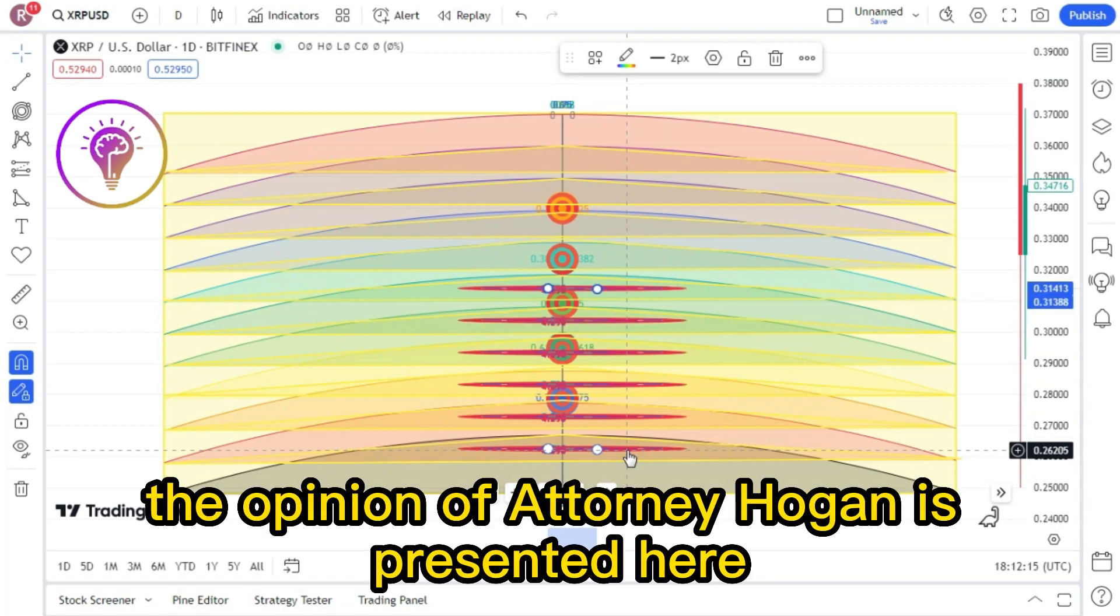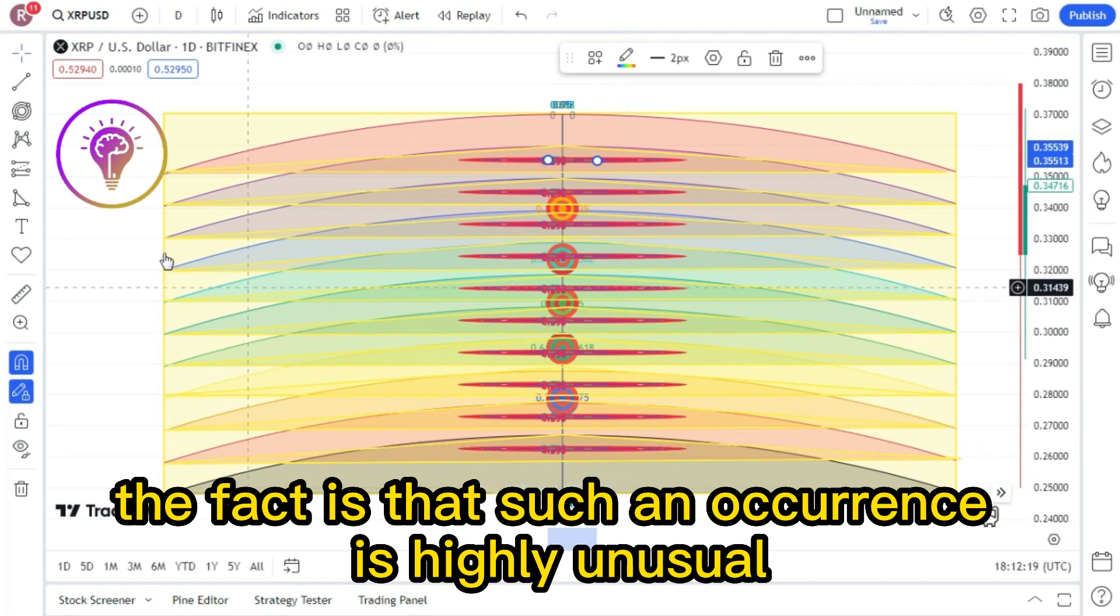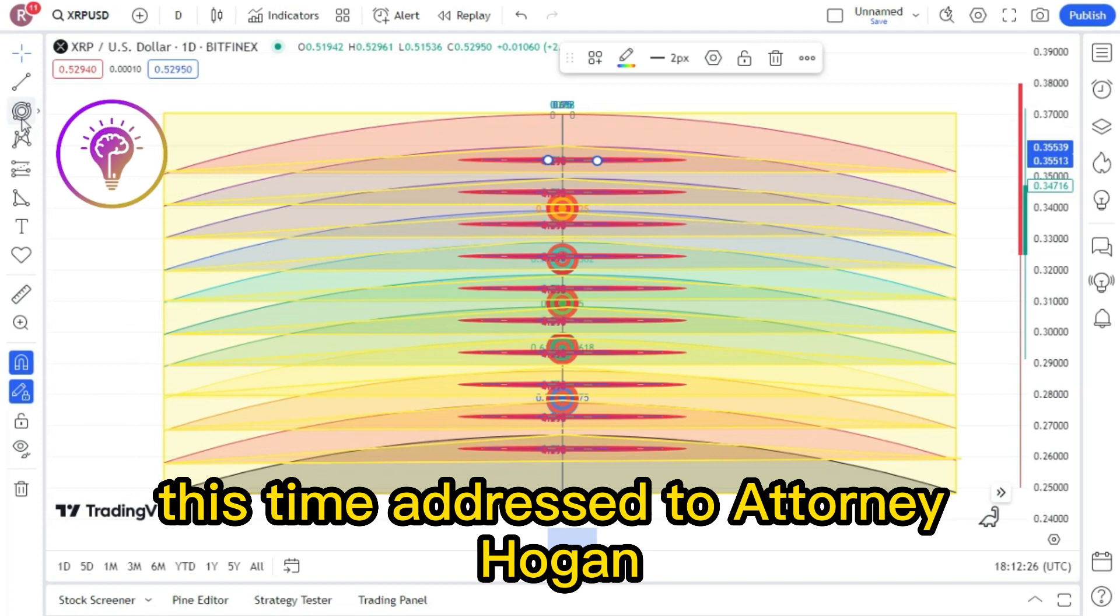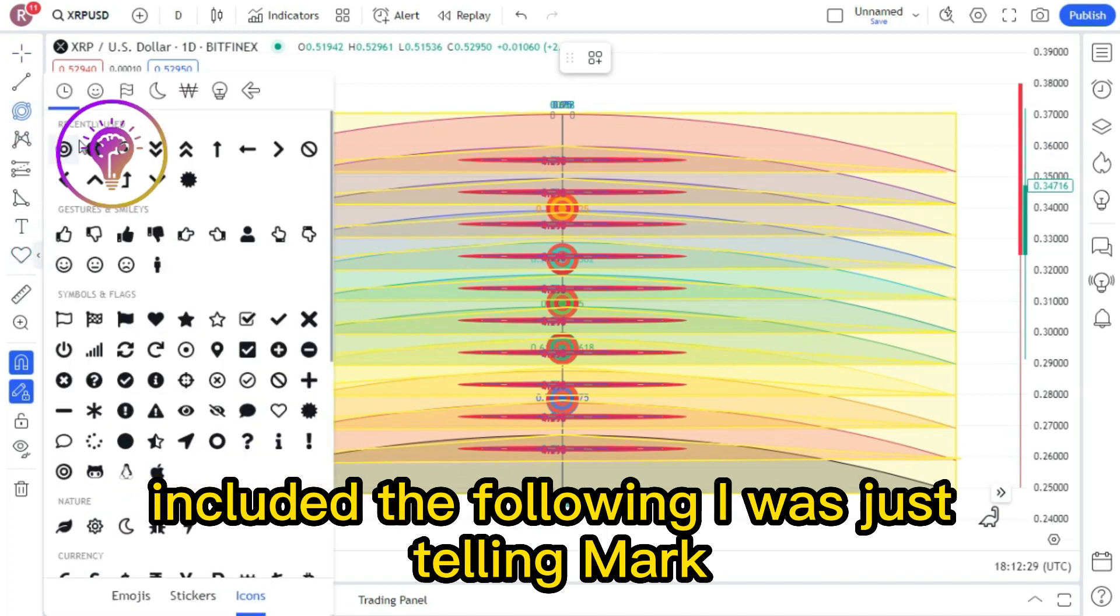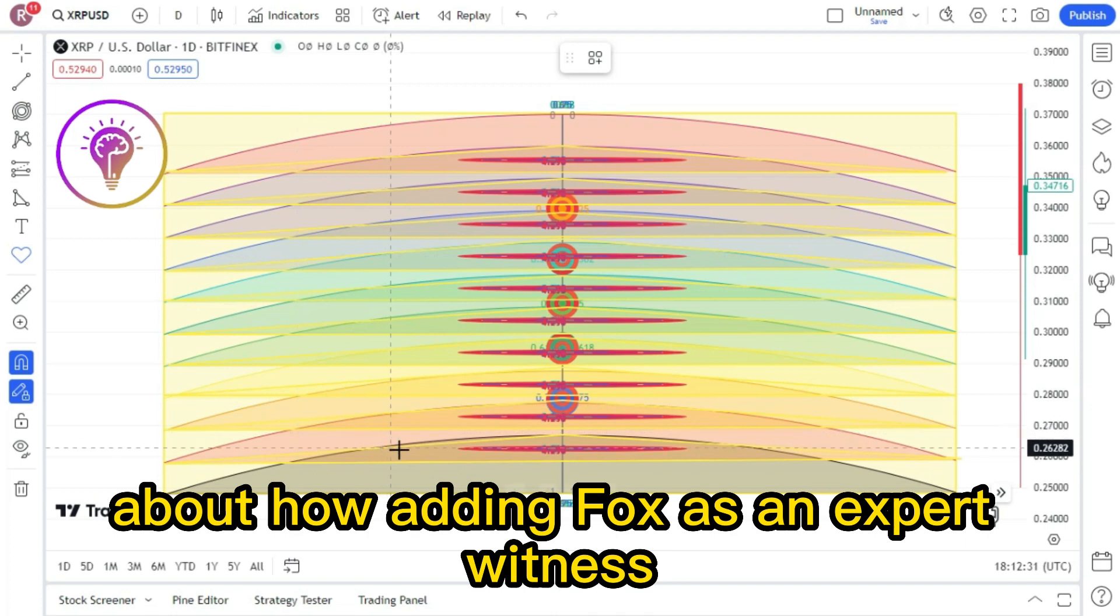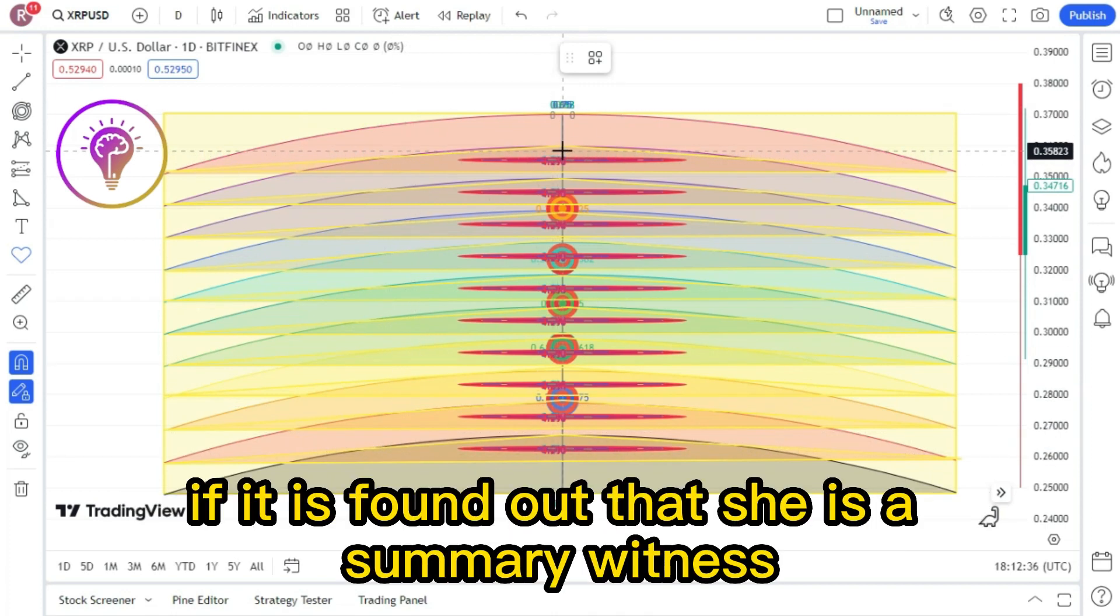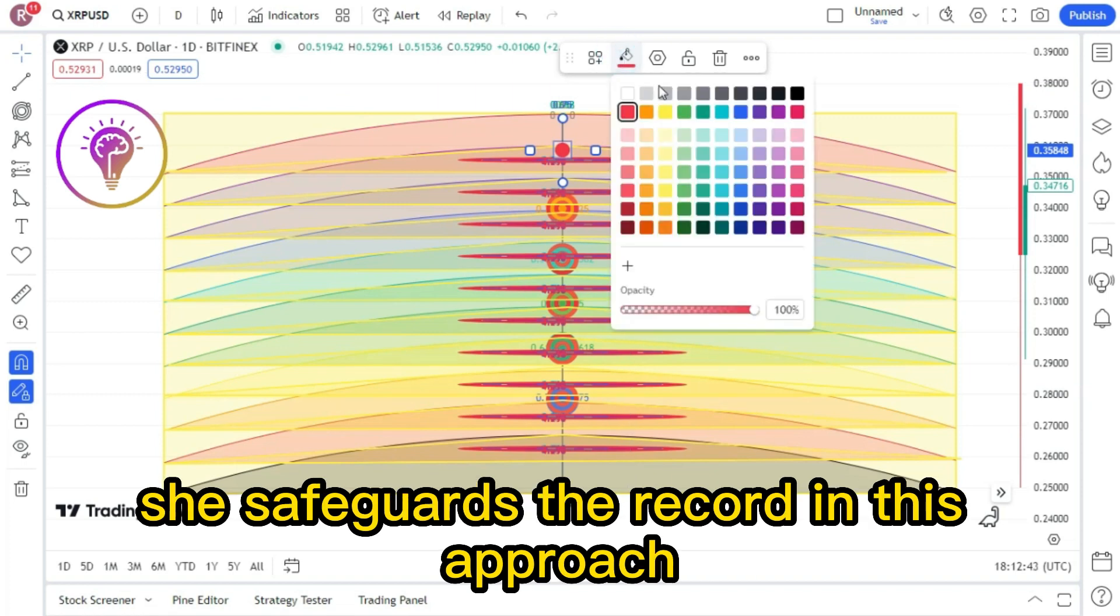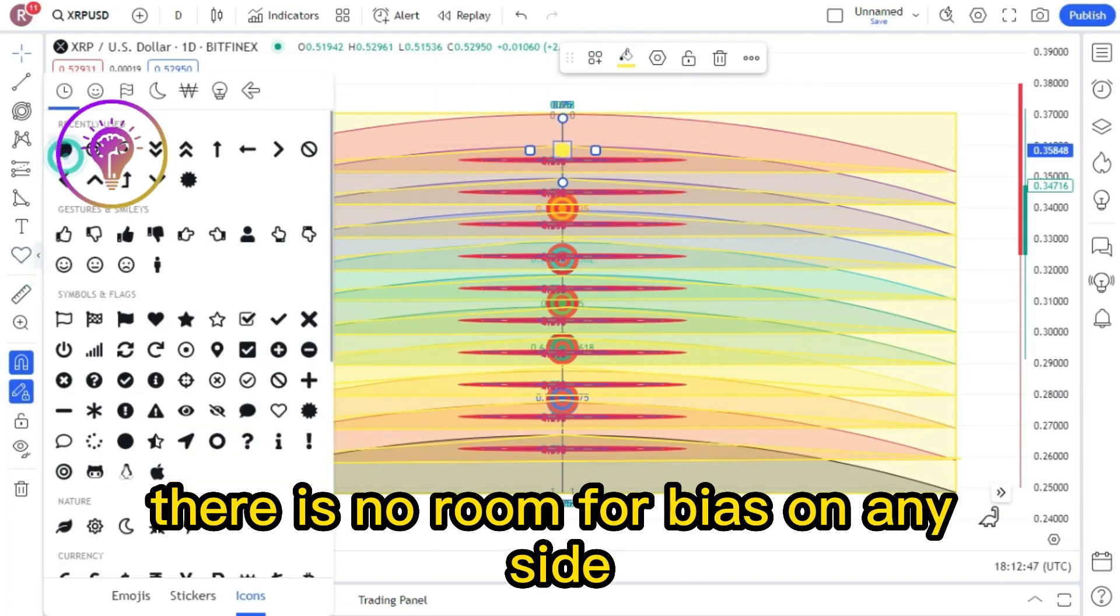That does appear to be excessive. While you make a valid point in favor of Ripple's, the computation remains same. The opinion of Attorney Hogan is presented here. The fact is that such an occurrence is highly unusual. Another post by Sherry, this time addressed to Attorney Hogan, included the following: I was just telling Mark about how adding Fox as an expert witness could complicate matters. There will be no harm done if it is found out that she is a summary witness. The deposition was permitted. On appeal, she safeguards the record. In this approach, there is no room for bias on any side.